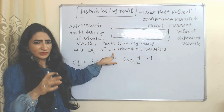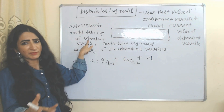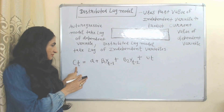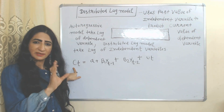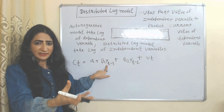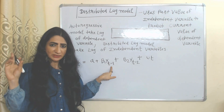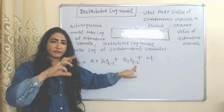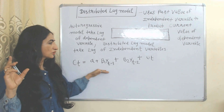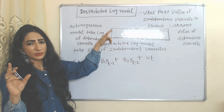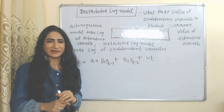That's why the distributed lag model takes lags of the independent variable, while the autoregressive model takes lags of the dependent variable. For example, we predict current consumption based on past income data. CT is our current consumption, which is the dependent variable, and income is the independent variable. YT minus one is last month's income and YT minus two is income from two months ago. Here we predict current consumption based on past income data.